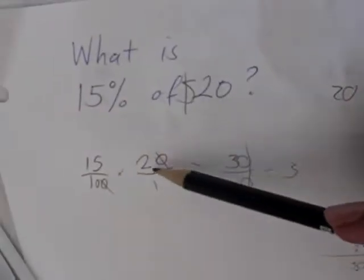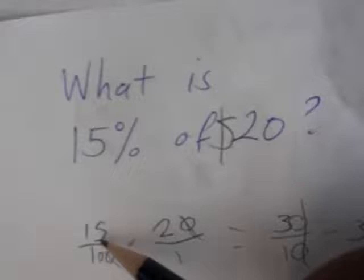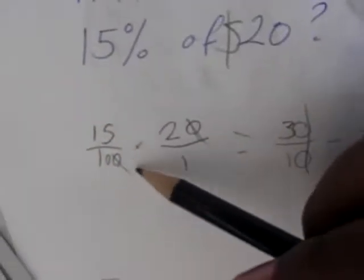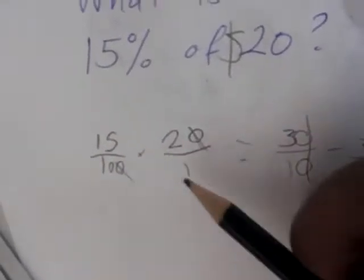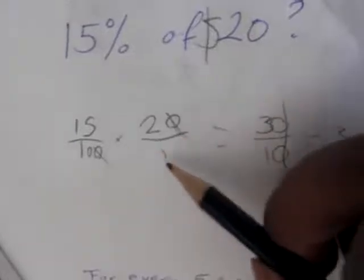Or you could take a zero off. Well, you know, 15% is 15 over 100, times 20, and we put that over 1. Because that's what it is, that's a fraction.